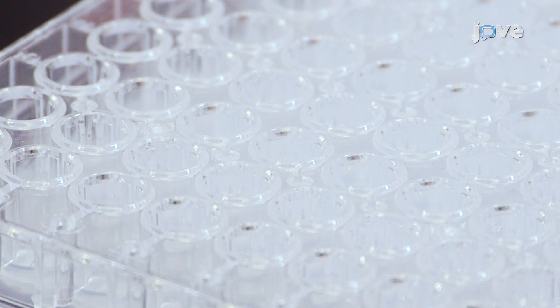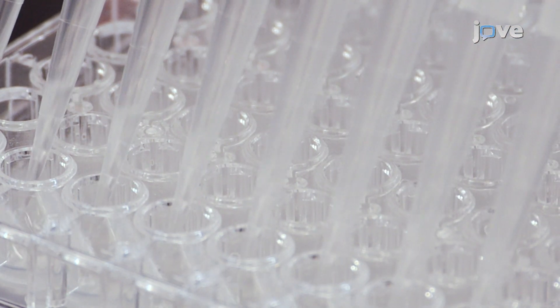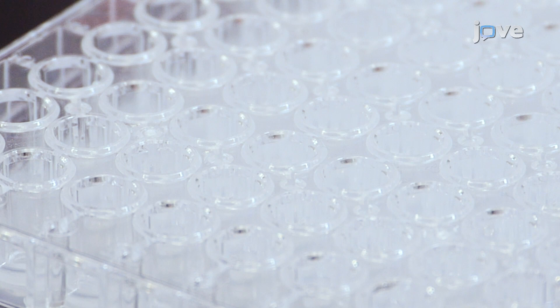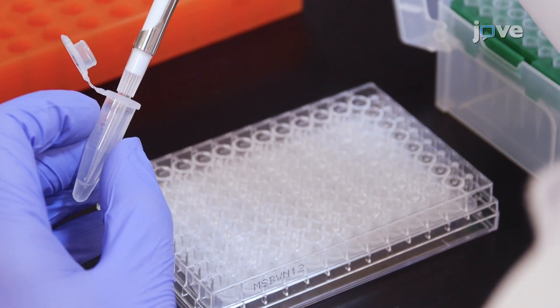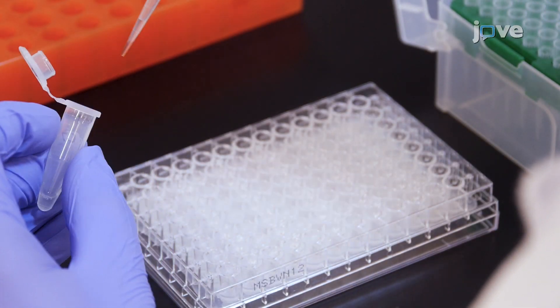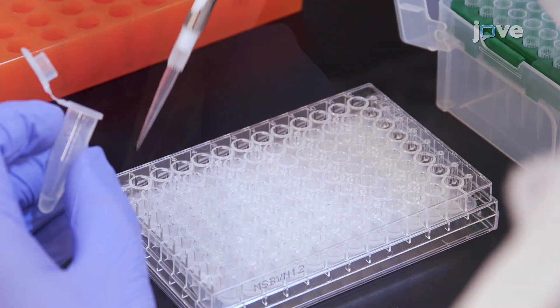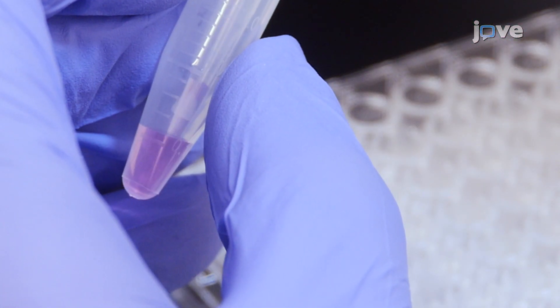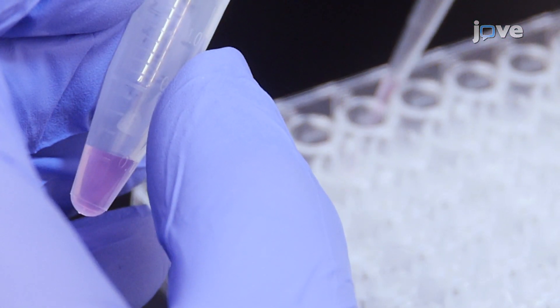For cell culture supernatant samples, add 25 microliters of assay buffer to all wells. Add 25 microliters of each standard to the standard wells. Finally, add 25 microliters of each sample to the sample wells.